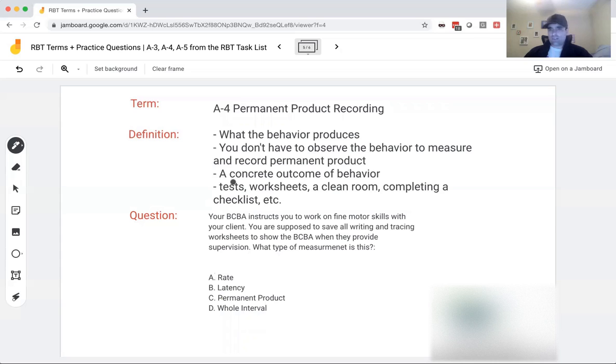Common examples: test. If you take a test, I can come back and see how you did. Worksheet, I can look at the worksheet after you've done it and see how you did. A clean room, if I tell you go clean your room, I can go check five hours later. I don't have to watch you clean it, see that it's clean. Completing a checklist, I give you a list of items from the grocery store. You pick those up. I can come back from work eight hours later and check to see if you got everything. I don't have to watch you go to the store, buy everything, et cetera. I can just come back and check your behavior produced all those items. Your behavior produced that test.